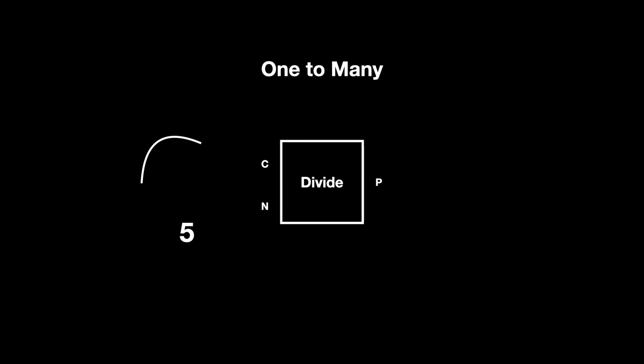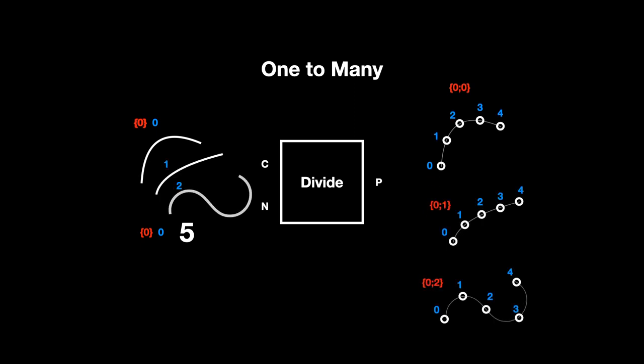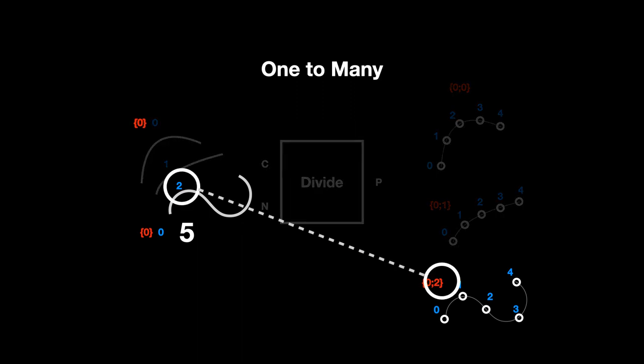A component like divide curve is what I call a one-to-many component. For every item you supply it, it will or can generate multiple items in the output. In order to keep your resulting data organized, these components append a new index to your branch path. This is useful when you supply a list of inputs. It keeps the resulting data organized by where it came from. The index on the input gets appended to the branch path of the output. If you look at the branch path, you can figure out which input item generated it. This 2 at the end of the red branch path on the right comes from the index of the item from which it was generated.